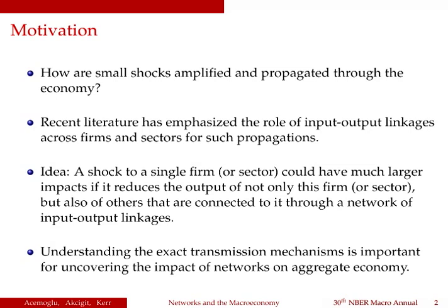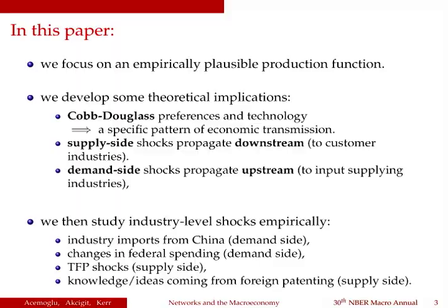How are small shocks amplified and propagated through the economy? A recently growing literature has argued that the role of networks through input-output linkages across firms and sectors could be one of those amplifying propagation mechanisms. The idea is extremely simple: a shock to a single firm or sector could have much larger effects on the aggregate economy if it reduces the output of not only the affected firm, but also other firms through input-output linkages. In order to understand the role of networks for macroeconomic outcomes, it is particularly important to understand the exact specific transmission mechanisms, and this will be the focus of our paper.